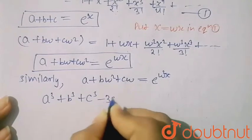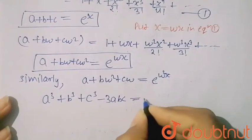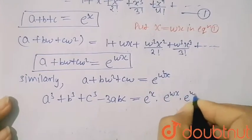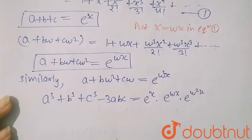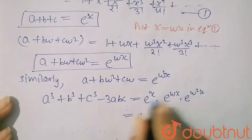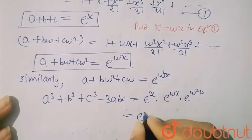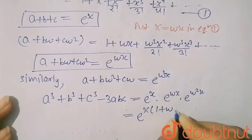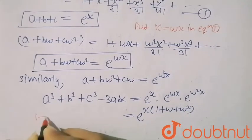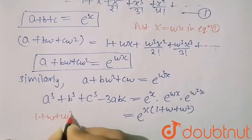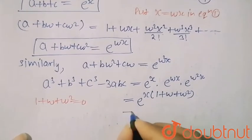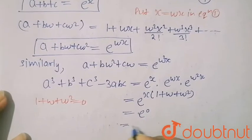So a³+b³+c³ - 3abc = eˣ · e^(ωx) · e^(ω²x). Since the base is the same, we add the exponents: x(1+ω+ω²). Since 1+ω+ω² = 0, we get e⁰ = 1.